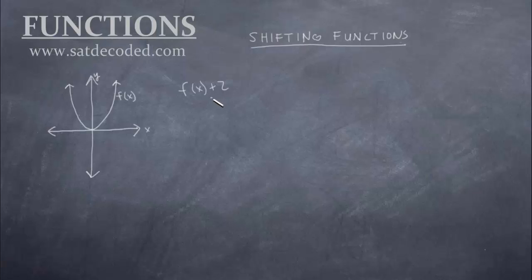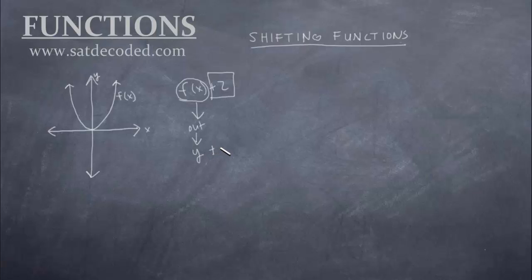When you have a number outside of the f of x, this is actually affecting the y value, because f of x as an entire function is an output, and outputs are y values. So if we just replace the f of x with y, what we really get is y plus 2 — I'm just carrying down this 2. So if you're adding 2 to the y, you're really just affecting the y value.